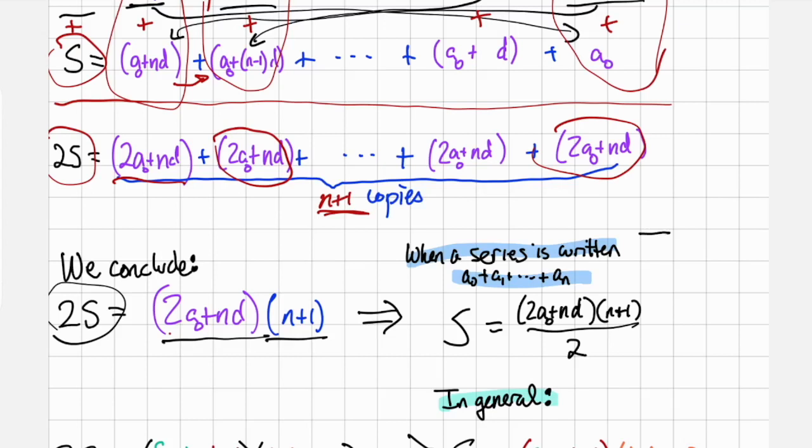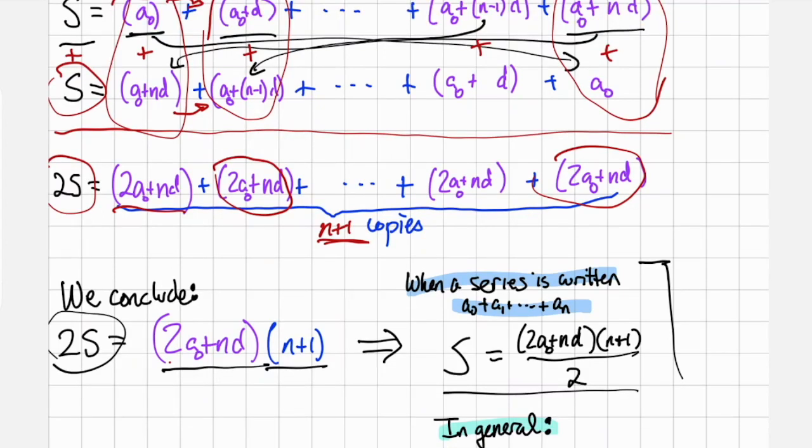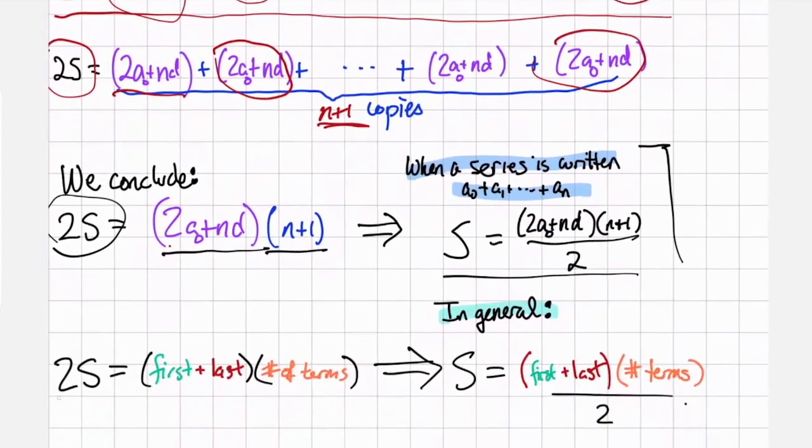And so when an arithmetic series is written as a0 plus a1 plus dot dot dot plus an, we can find the sum of the series using this formula. Another way you can calculate the value of the sum is to see 2a0 plus nd as the sum of the first and the last terms, and to see the number of copies as the number of terms in the series.